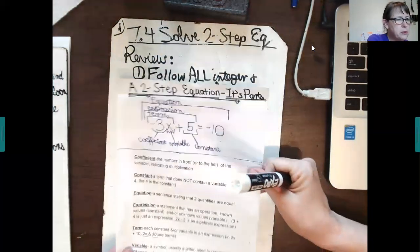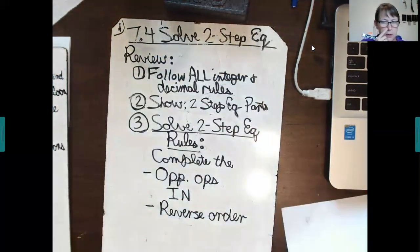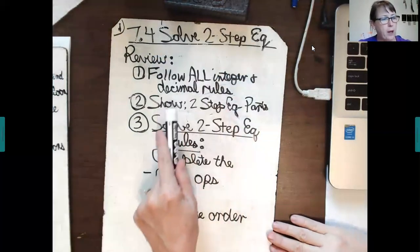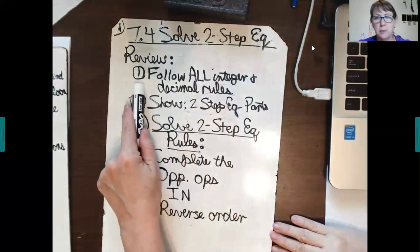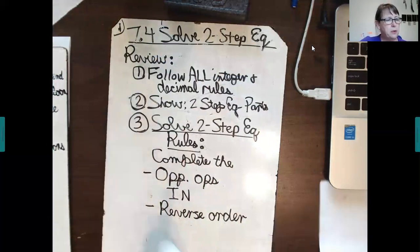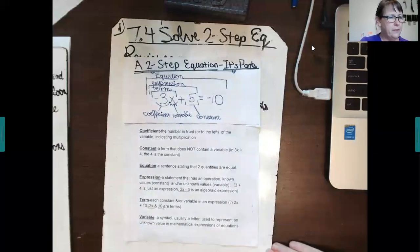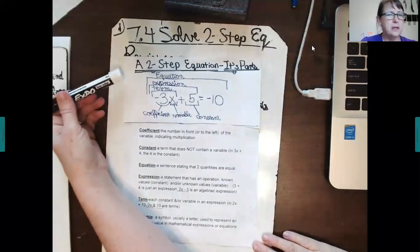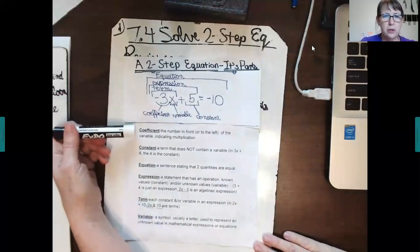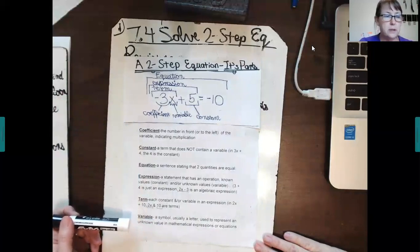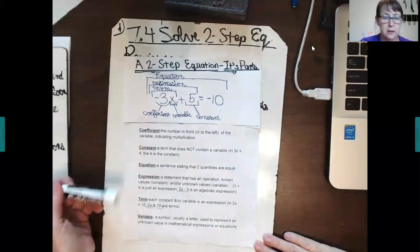Then I also want to remind you of some of the skills you need to use in order to successfully complete this skill. Follow all integer and decimal rules. See how that's at the top? Make sure you do that. Number two, a two-step equation and its parts. Make sure you have this written down, if not in this lesson, in a previous lesson. Know what each part is, and what does it mean for it to be the named part that it is.